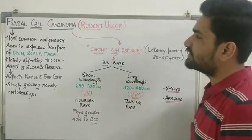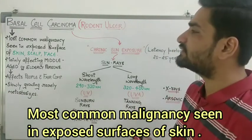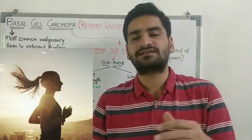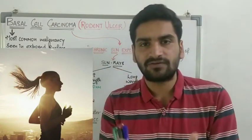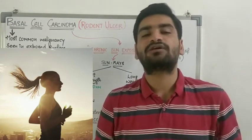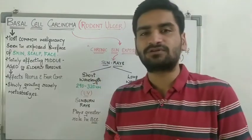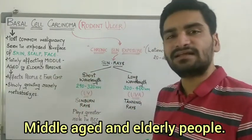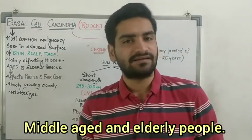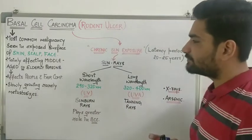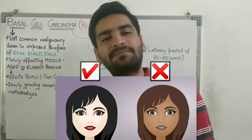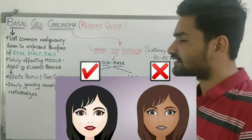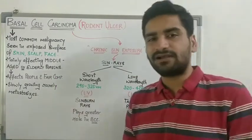Basal cell carcinoma is considered one of the most common malignancies seen in exposed surfaces of skin — such as the scalp, face, neck, and hands. It is mainly seen in middle-aged and elderly people; some rare cases are seen in younger individuals. It most commonly affects fair-skinned people and does not commonly affect dark-skinned individuals. This is a slowly growing tumor, and its chances of metastasis or spread are very rare.